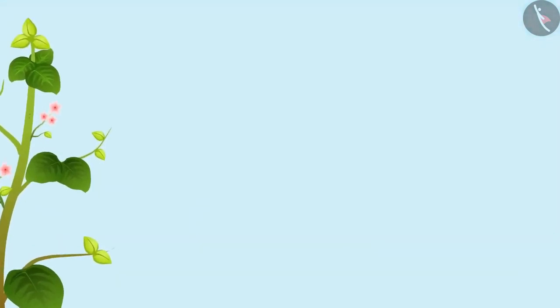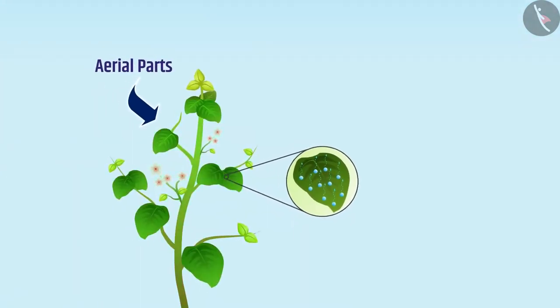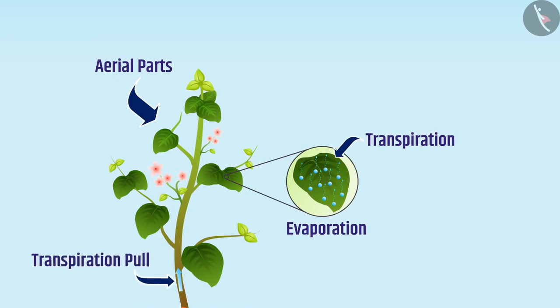Similarly, there is loss of water in the form of vapor from the aerial parts of the plant, which is called transpiration. This evaporation creates a suction called transpiration pull, due to which water gets pulled upward and can reach various parts of the plant. Transpiration also regulates plant temperature.